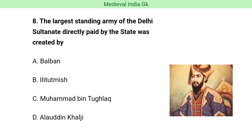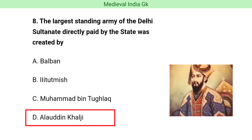Question number eight. The largest standing army of the Delhi Sultanate directly paid by the state was created by whom? The correct answer is option D, i.e. Alauddin Khilji.